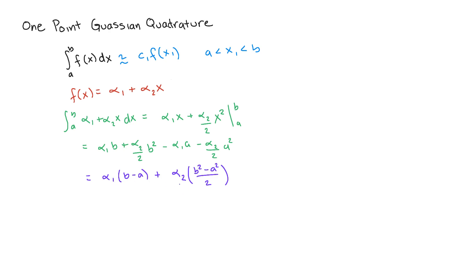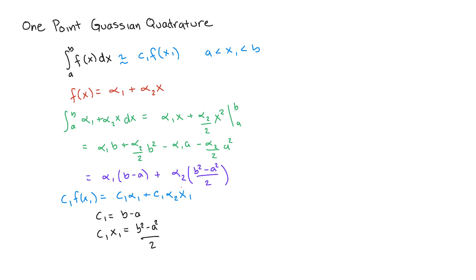We have terms alpha_1 and alpha_2 at the beginning of these terms. All we have to do is find c1 and x1. We define c1 times f(x1), and if we equate this to the equation, we can see that the coefficient of alpha_1 is c1, which equals b minus a, and the coefficient of alpha_2 is x1 times c1. So just by looking at the equation, we can define c1 and c1 times x1. We're close to finding the approximate solution, which is c1 times f(x1).